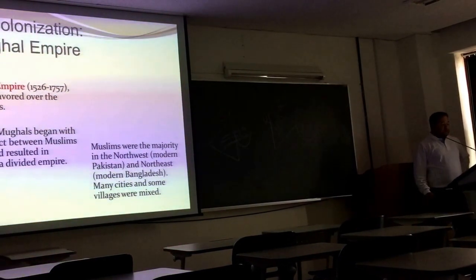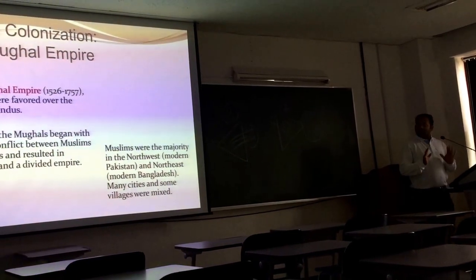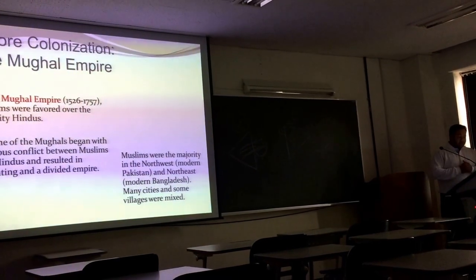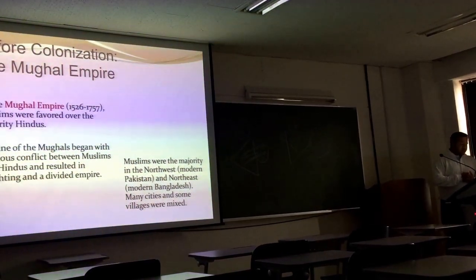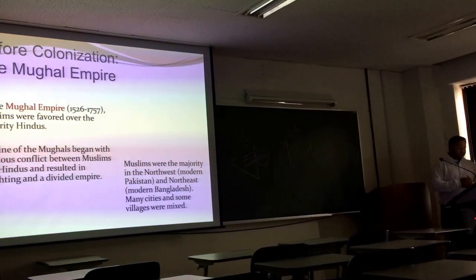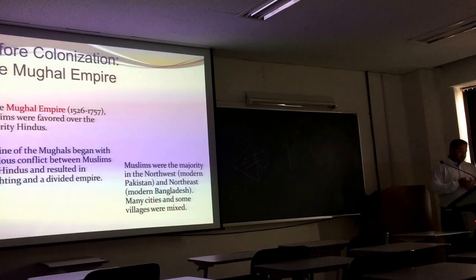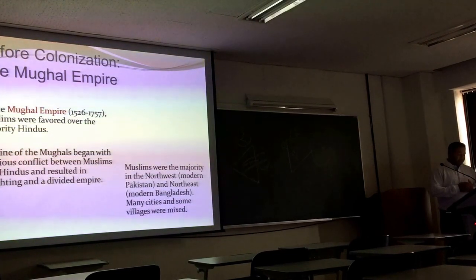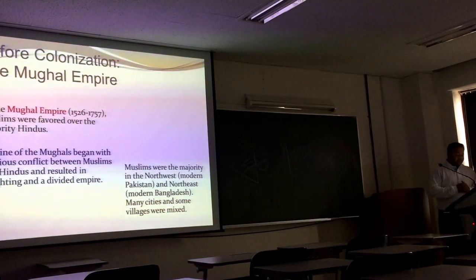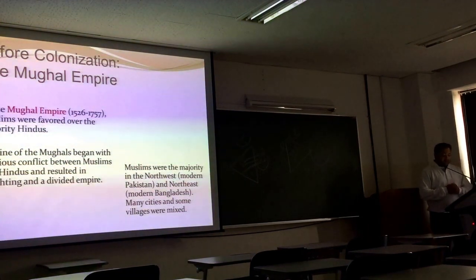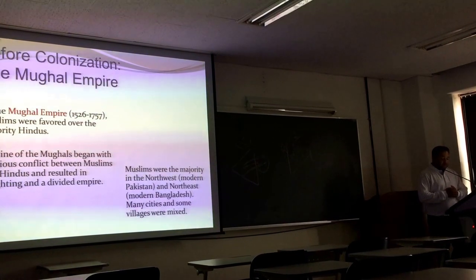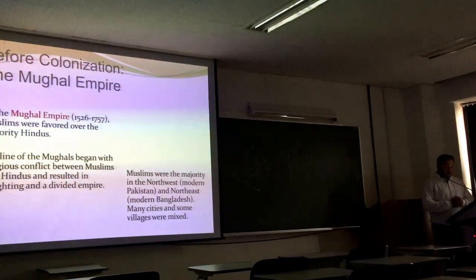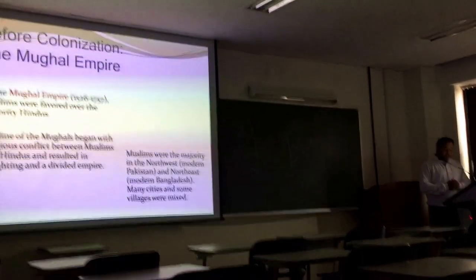Before colonization — the Mughal Empire. I will try to explain slowly. In the Mughal Empire, 1526 to 1757, Muslims were favored over the majority Hindus. The decline of the Mughals began with religious conflict between Muslims and Hindus, resulting in fighting and a divided empire. Muslims were the majority in the northwest — modern Pakistan — and northeast — modern Bangladesh, where I am from. Many cities and some villages were mixed.